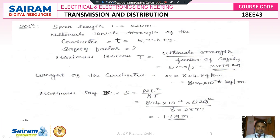Weight of the conductor w = 804 kg per kilometer = 804 × 10⁻³ kg per meter. Now the maximum sag formula: S = wL²/8T = (804 × 10⁻³ × 220²) / (8 × 2879). Doing the simplification, the maximum sag S = 1.69 meters.